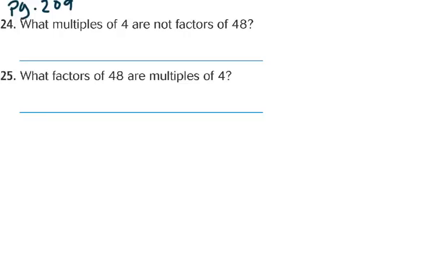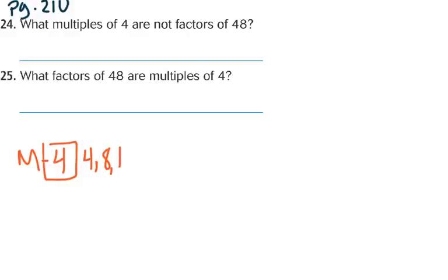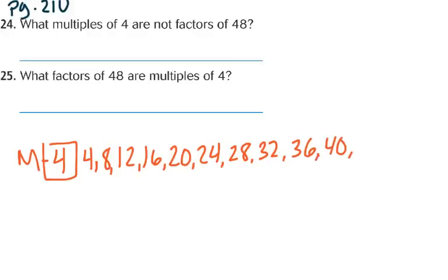Turn your page two times to page 210. It says: what multiples of 4 are not factors of 48? And: what factors of 48 are multiples of 4? We're going to find multiples of 4 and factors of 48 and compare them. Let's start with multiples of 4: 4, 8, 12, 16, 20, 24, 28, 32, 36, 40, 44, and 48. We need to go at least up to 48. Those are all our multiples of 4.